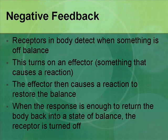The last thing you need to know about homeostasis is how your body keeps things in balance, and it's through a process called negative feedback. Essentially, you have a bunch of receptors in your body that detect when something is off balance or wrong. These receptors then switch on something called an effector, and this effector causes some kind of reaction to restore the balance.